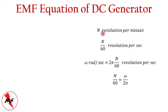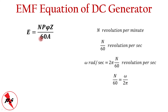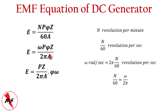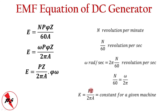The armature speed N RPM means N/60 revolutions per second. Speed in radians per second is ω = 2π × (N/60), giving N/60 = ω/2π. Substituting into the EMF equation, E = PφNZ/60A, we replace N/60 with ω/2π to get E = ωPφZ / 2πA. The parameters P, Z, and A are constant for a given machine, while φ and ω are variable.